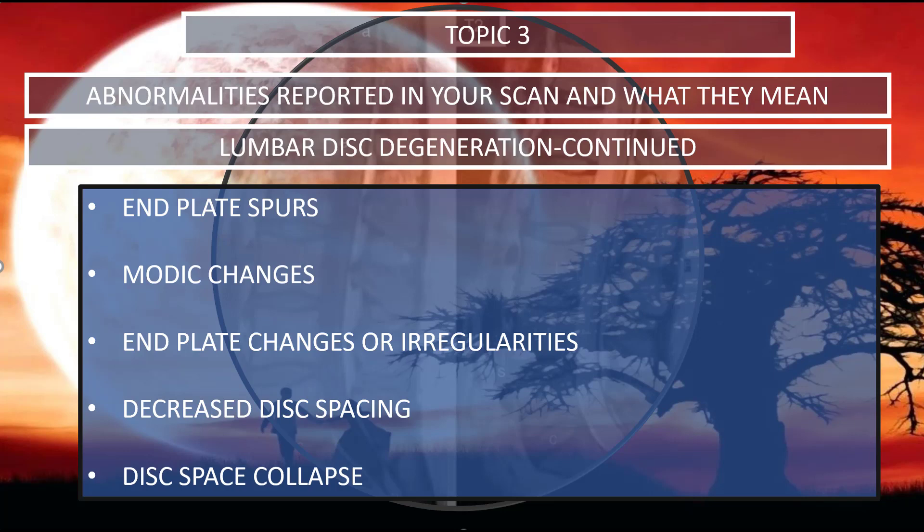To conclude this section on lumbar disc degeneration, these are all terms that can be used interchangeably, but I just want to show you what's meant by a couple things. End plate spurs, modic changes, end plate changes or irregularity, decreased disc spacing, and disc space collapse. What I want you to keep in mind is all these things, although often asymptomatic, can affect the load-bearing capabilities of the spine. You'll often see these mentioned in your MRI report, and I just want you to know what they are.